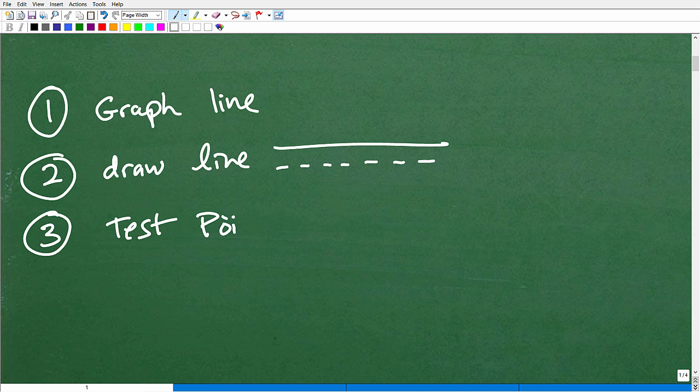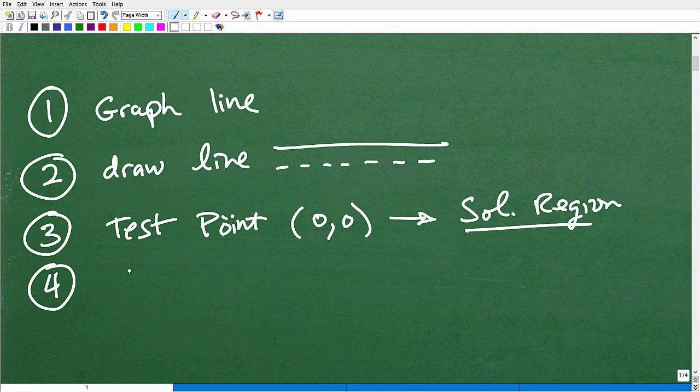Then a third thing is we're going to test, we're going to test a point. Test a point. And the point we're going to be testing is the coordinate 0, 0. And this is to help determine what we call the solution region. Then lastly, we're going to shade the solution region.